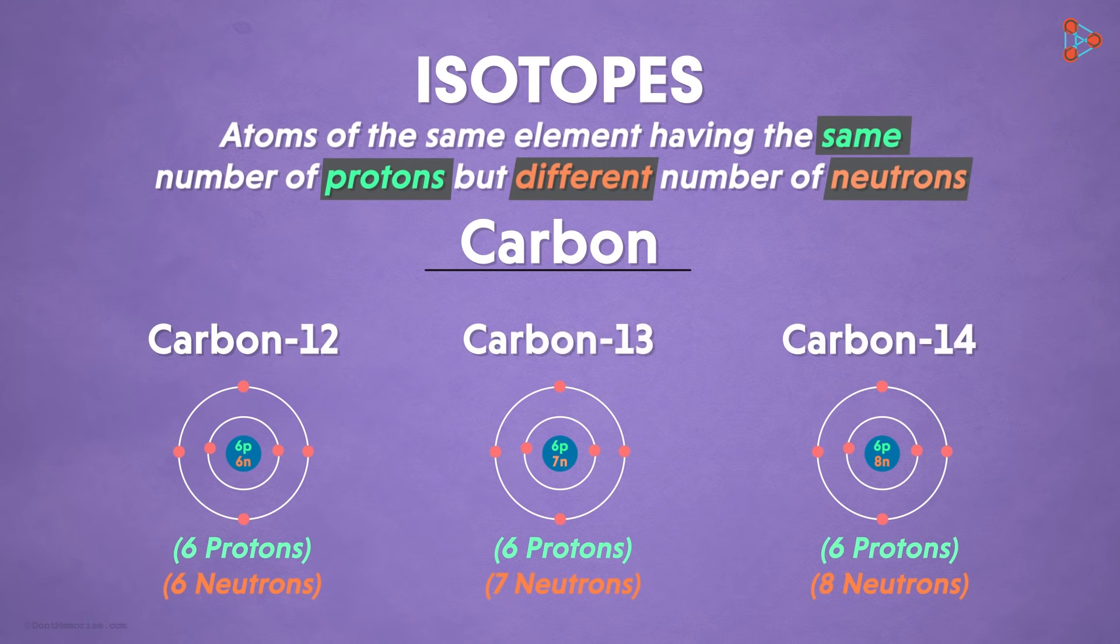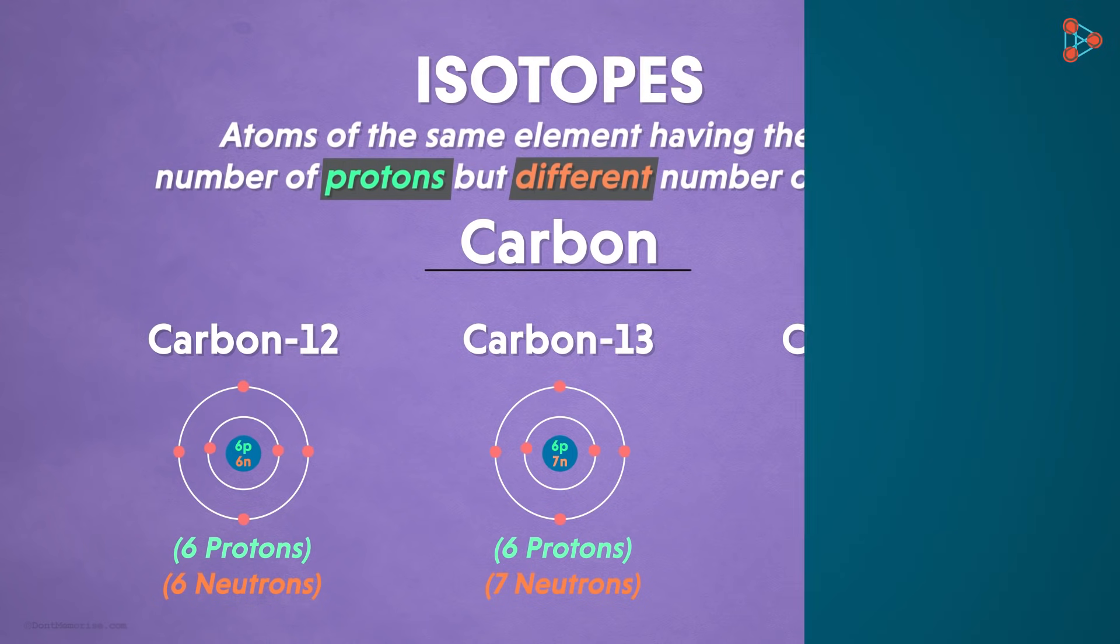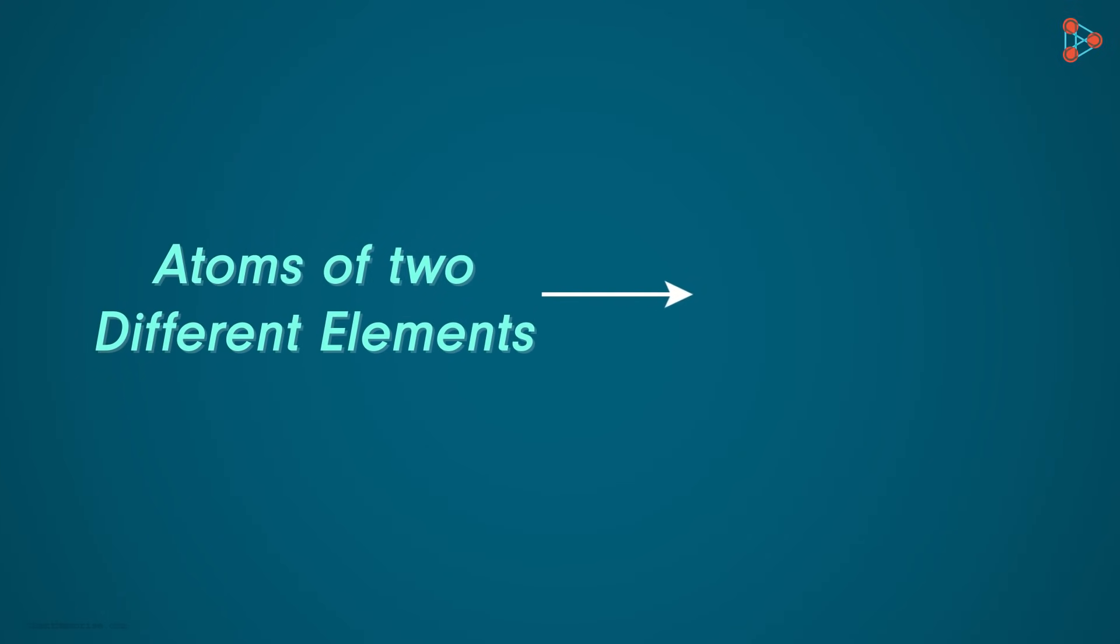Now this was about the different forms of the same element. But what if I tell you that atoms of 2 different elements can have the same atomic mass? Yes! Let's understand this with an example.